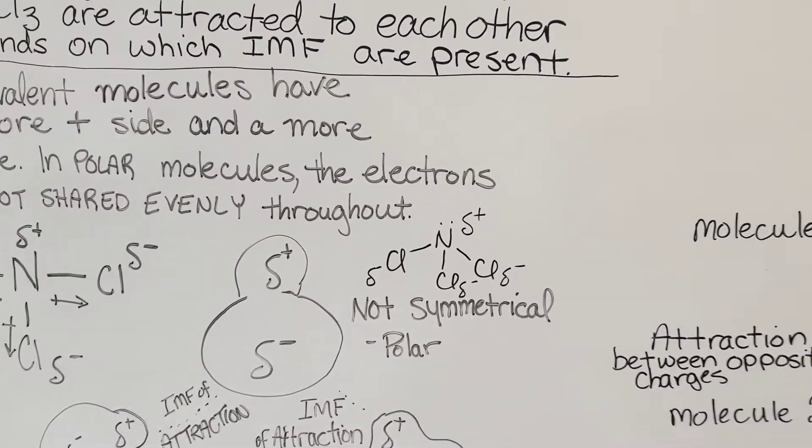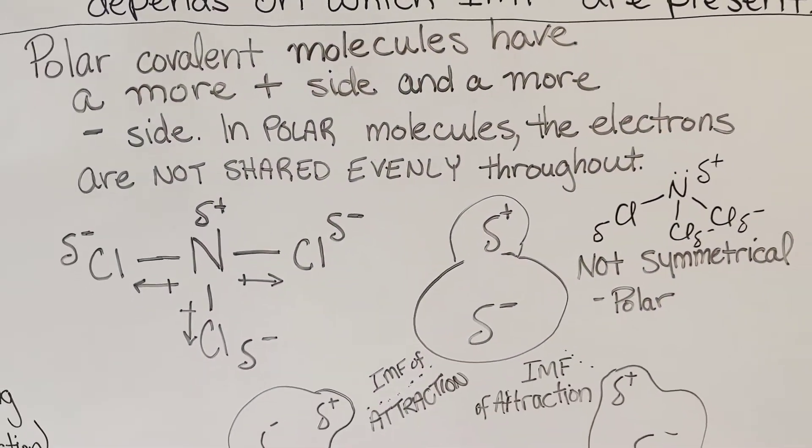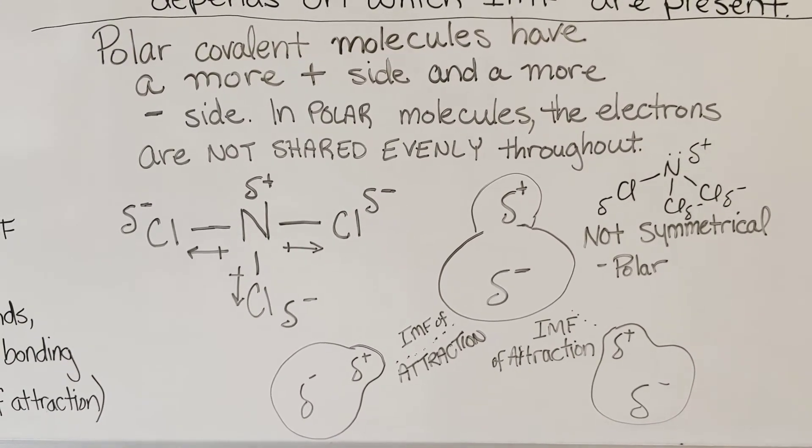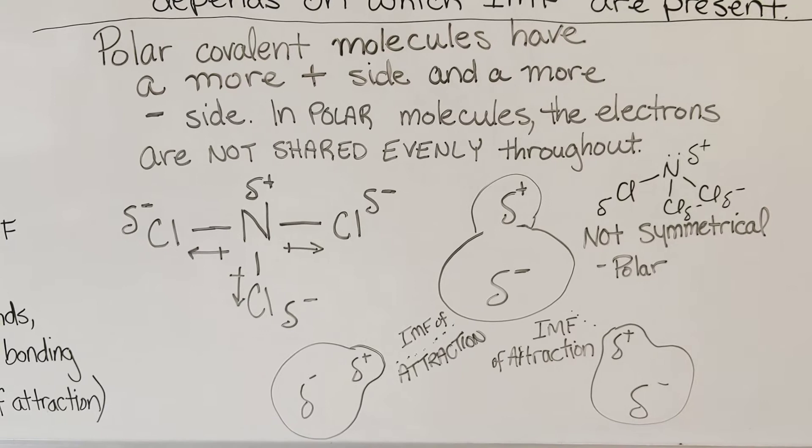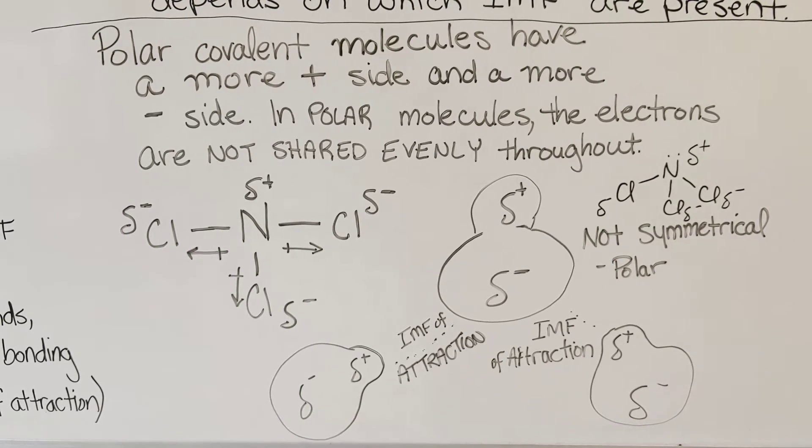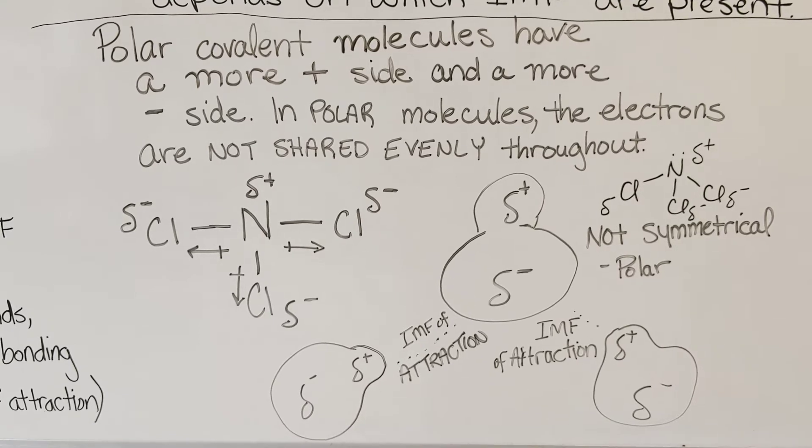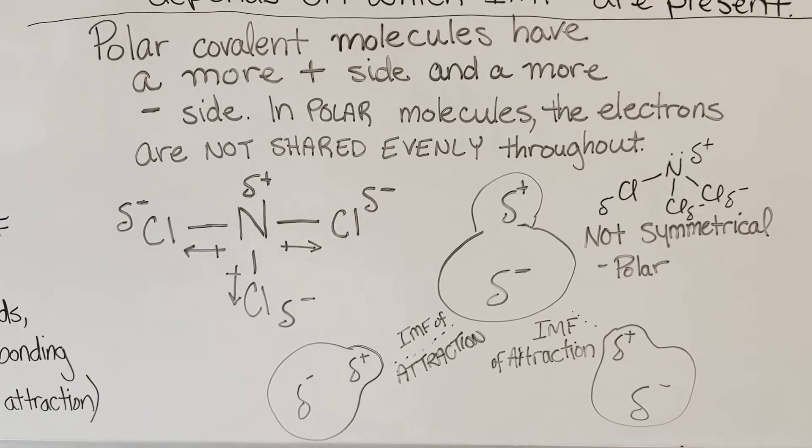With NCl3, we discovered in the previous video, part 3, that it is a polar covalent molecule. That means it has a more positive side to the molecule and a more negative side. In polar molecules, the electrons are not shared evenly throughout the molecule.